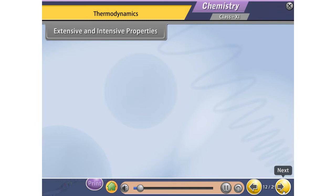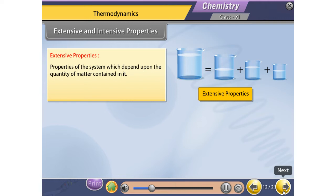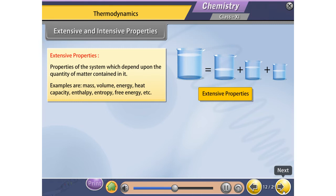Extensive properties are properties of the system which depend upon the quantity of matter contained in it. Examples include mass, volume, energy, heat capacity, enthalpy, entropy, free energy, etc.